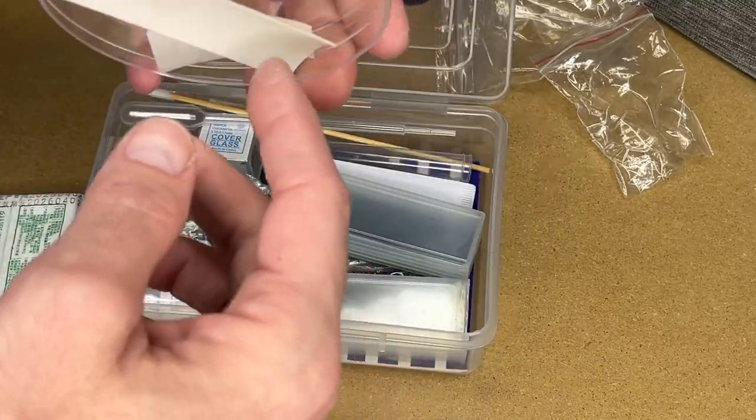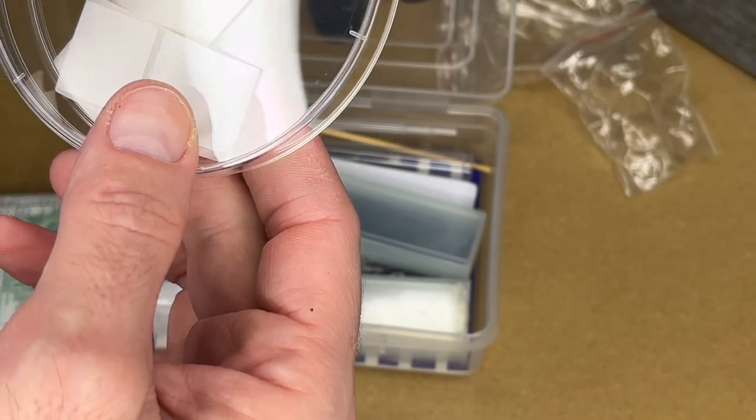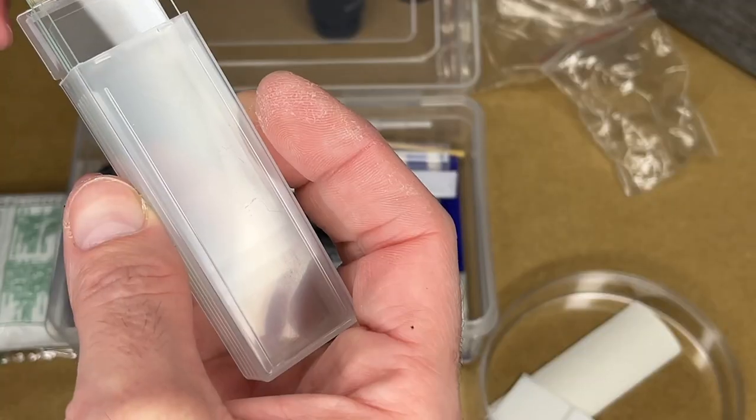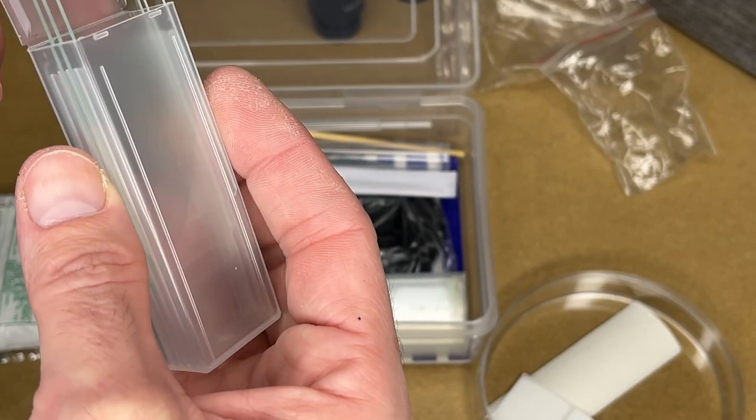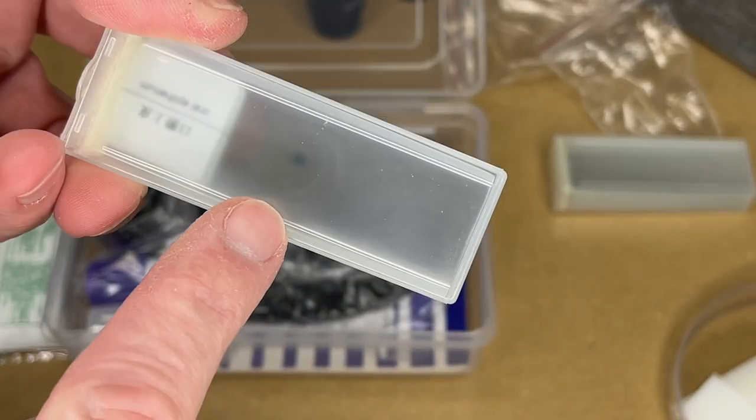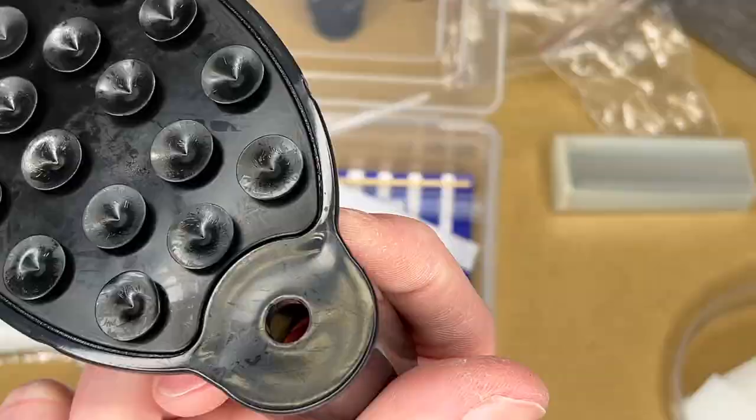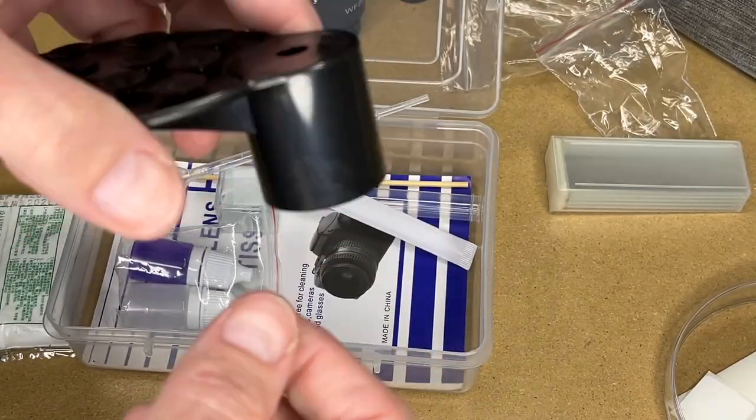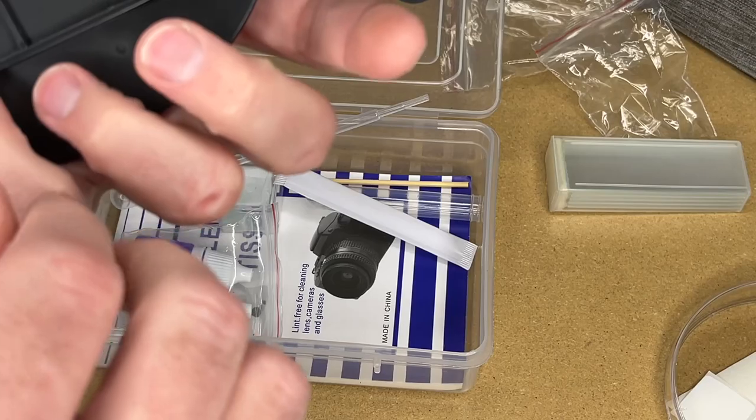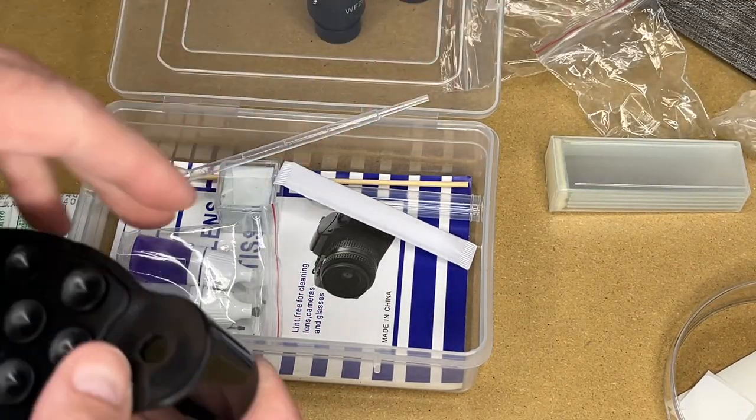This is some gauze, petri dish. It's like maybe a sticker. These look like slides. They seem to be actual glass slides, so that's nice. These look like we have some specimens already on the slides. This is a camera mount, so this can go on the eyepiece and you can suction cup a camera to it. We'll see how that works.